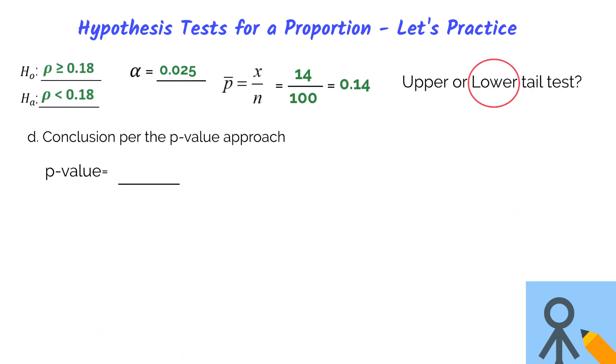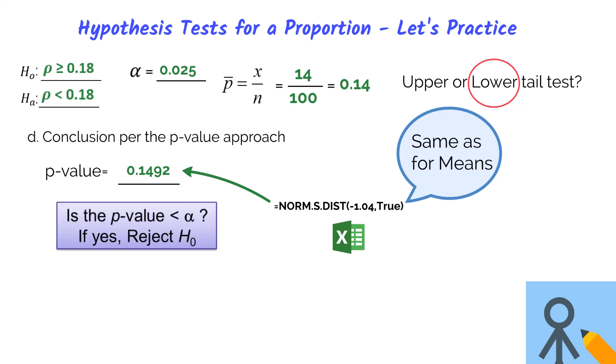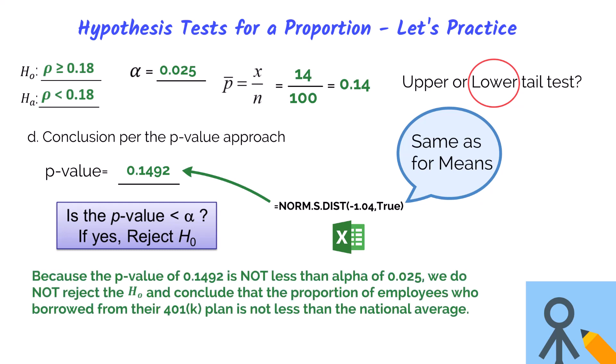For part d, let's use the p-value approach. To calculate the p-value in Excel, we input norm.s.dist with the z-value of negative 1.04, and we get a p-value of 0.1492. Since the p-value of 0.1492 is not less than the alpha of 0.025, we do not reject the null and conclude that the proportion of employees who borrowed from the 401k plan is not less than the national average. Both the p-value and critical value approaches give the same result — if they don't, double-check your calculations.